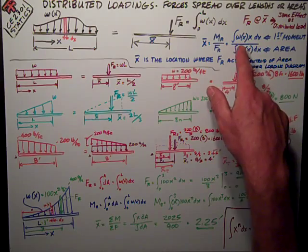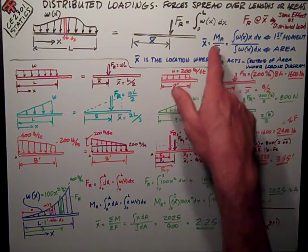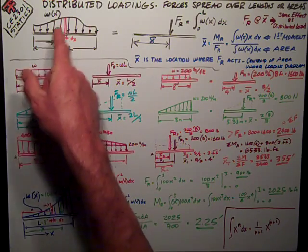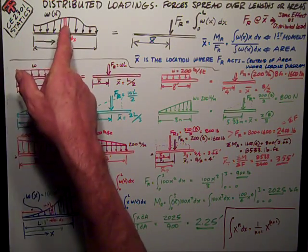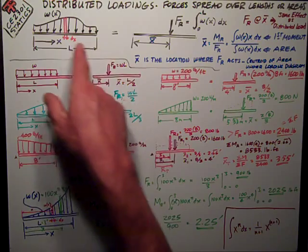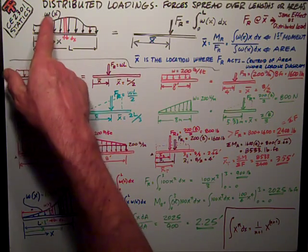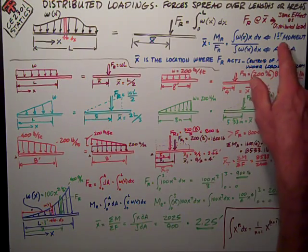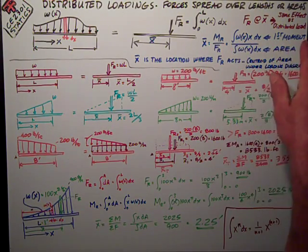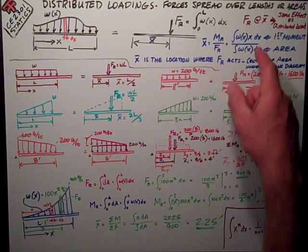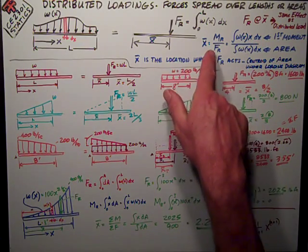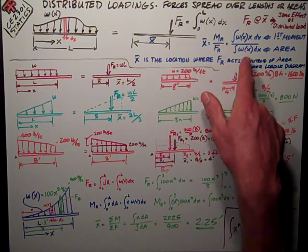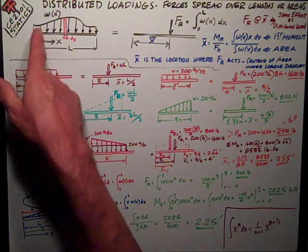We can write it in calculus form. It's the integral of wx dx, and then we're going to multiply by the distance to that point of reference, which is x of that little elemental strip that's wx tall by dx wide.